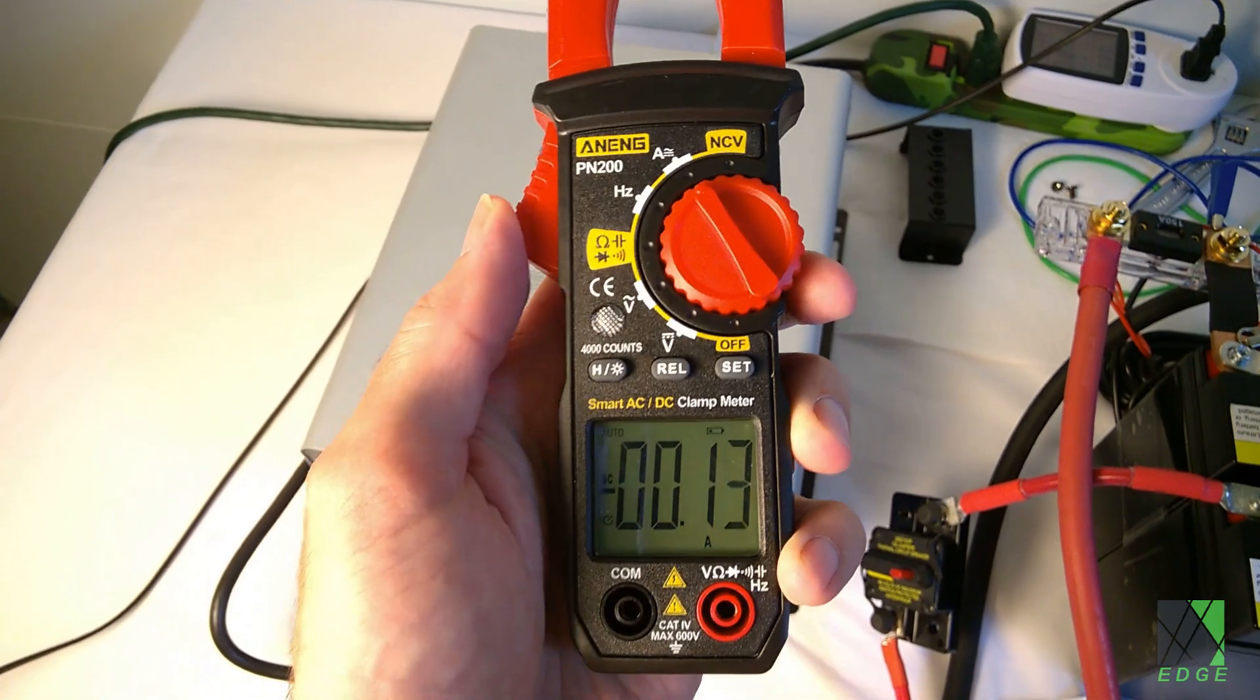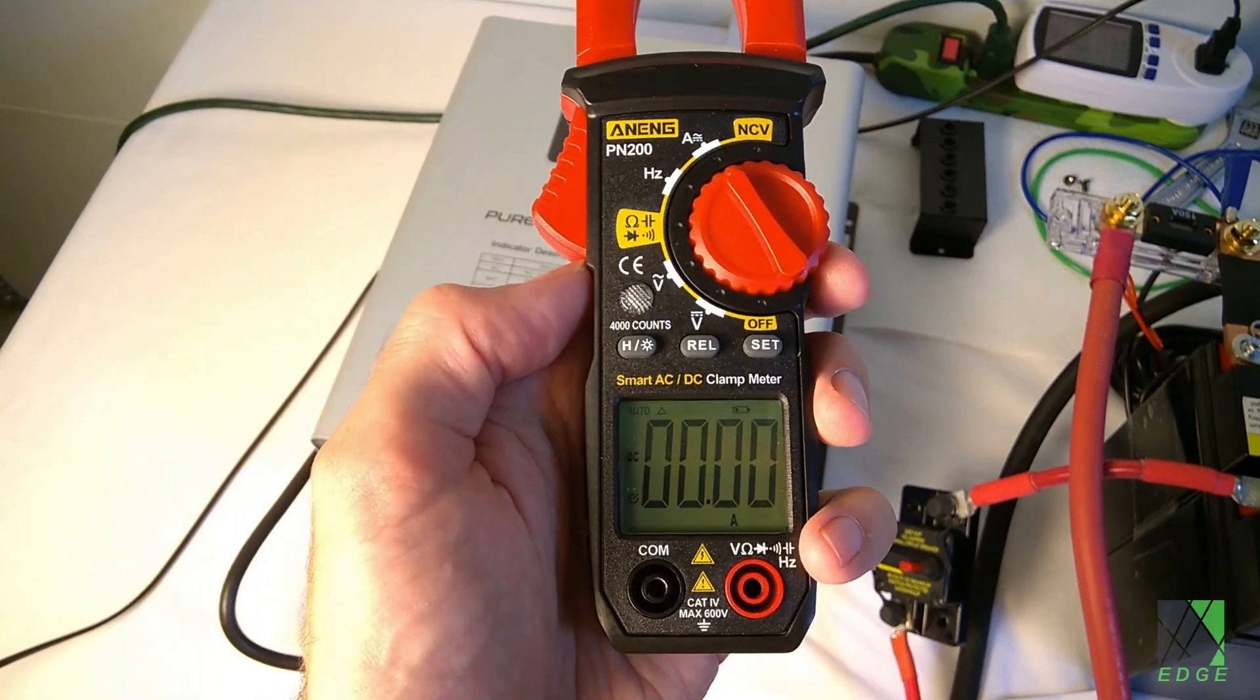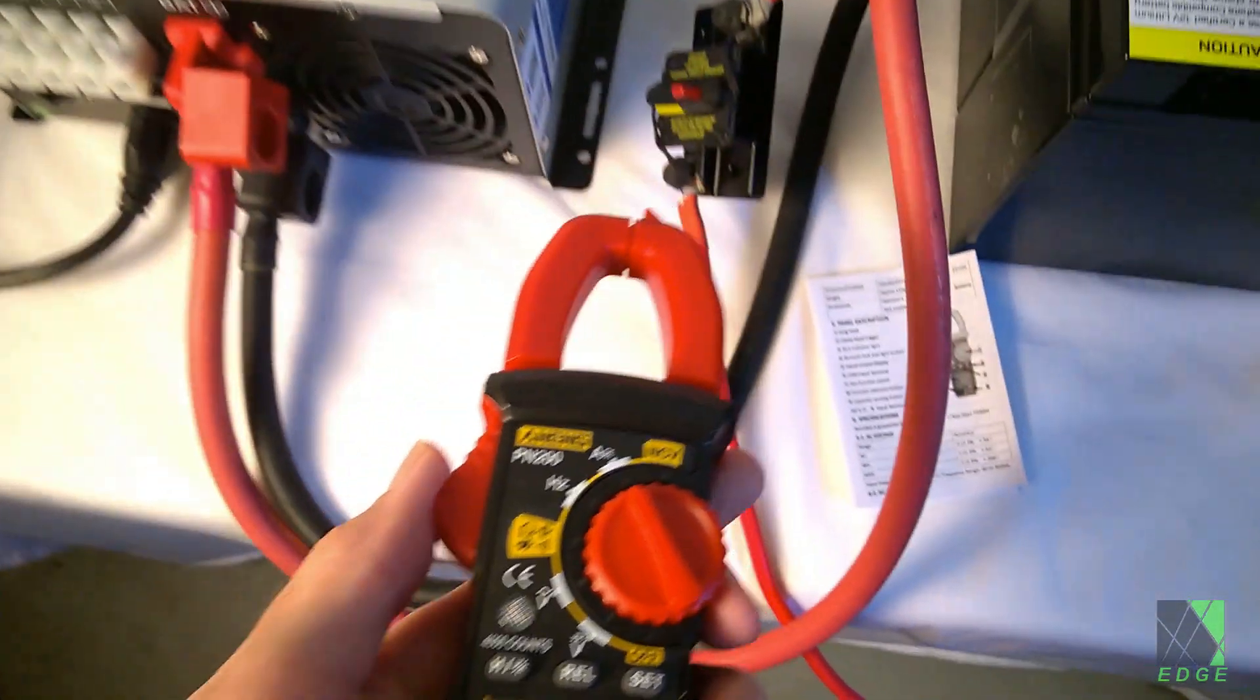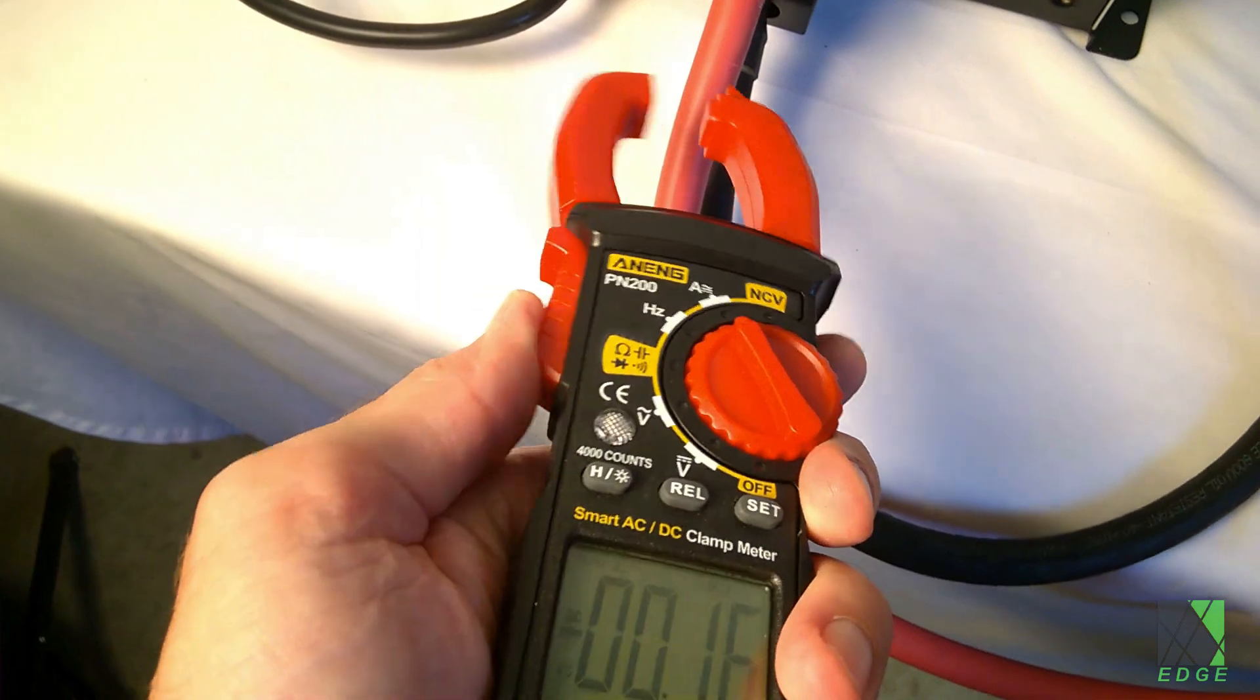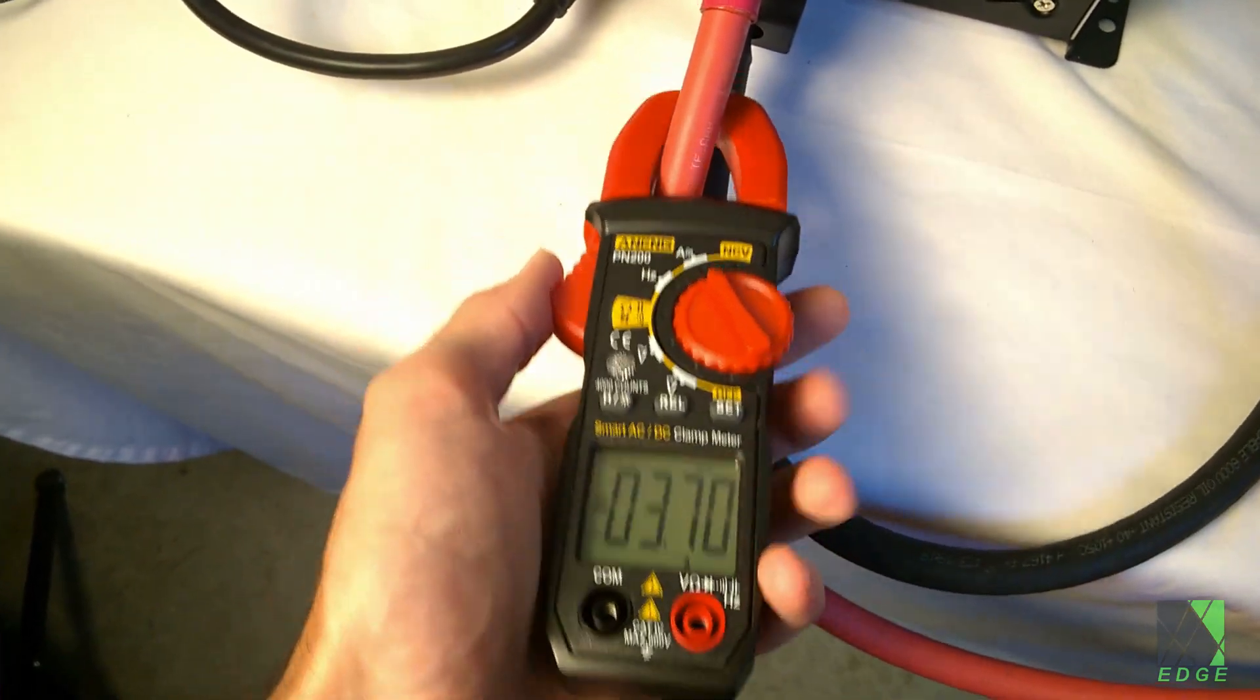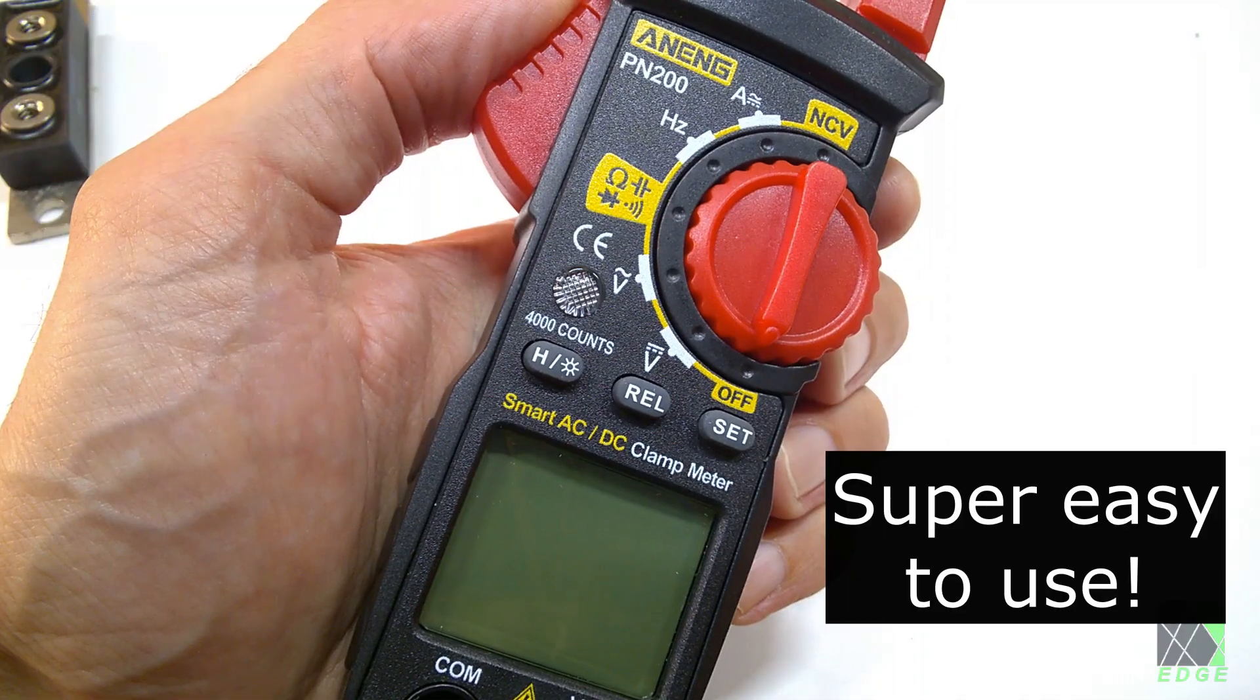Amperage measurement. This is the mode I use most often. Both AC and DC current can be measured in any single wire. Here I use the clamp meter in DC mode to see how much current is flowing into the inverter. Just turn it on and clamp the wire.